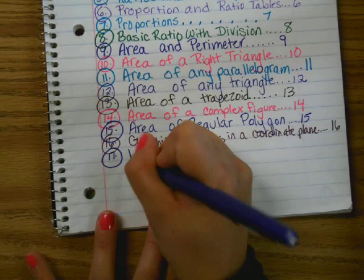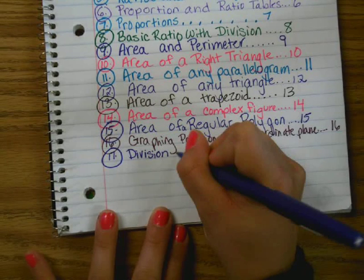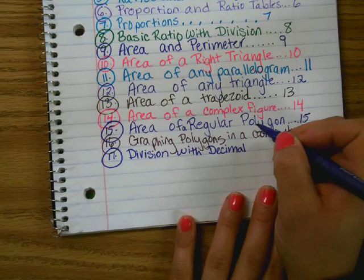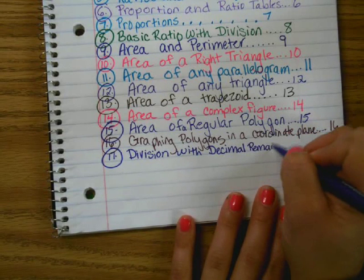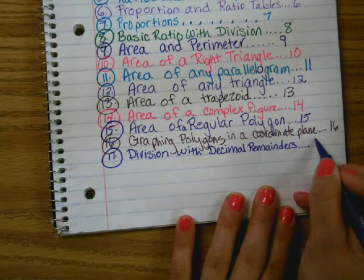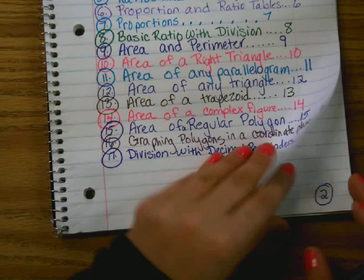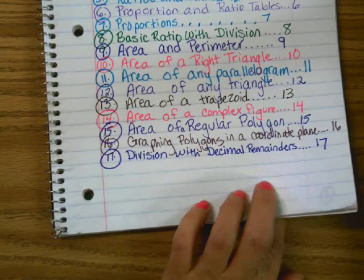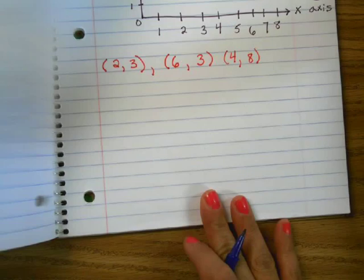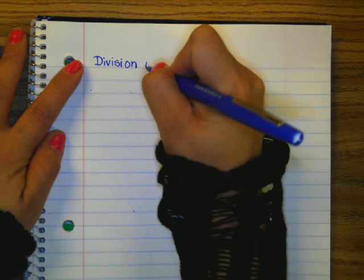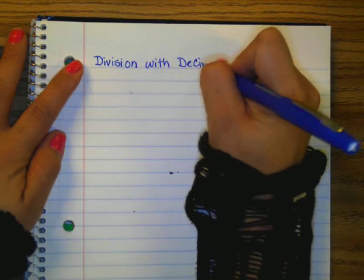Title it division with decimal remainders. Put your page number. Turn to that page and title it division with decimal remainders. Capitalize, underline your title.